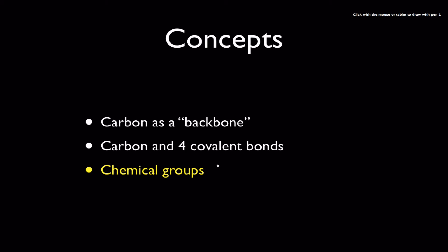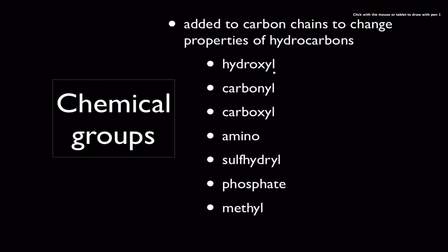The last thing I want to talk about is some chemical groups that you need to know. Chemical groups are things that are added to carbon chains that change the properties and of course change the name of the chemical. And there's a set of these you guys need to be familiar with: there is something called a hydroxyl group, a carbonyl group, carboxyl groups, amino groups, sulfhydryl groups, phosphate groups and methyl groups.